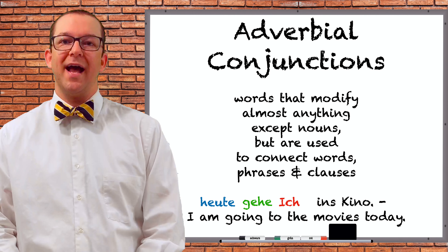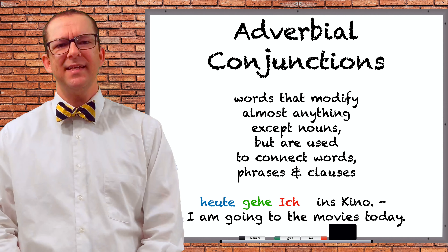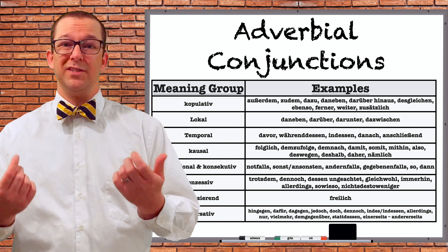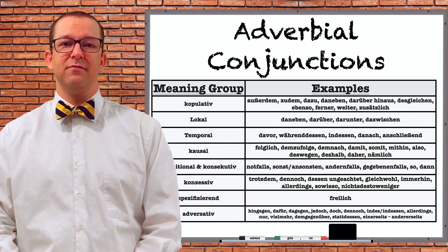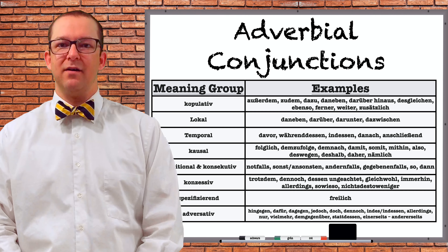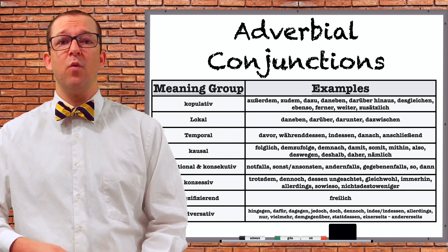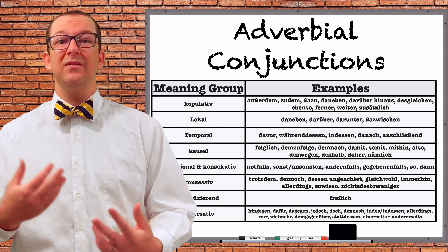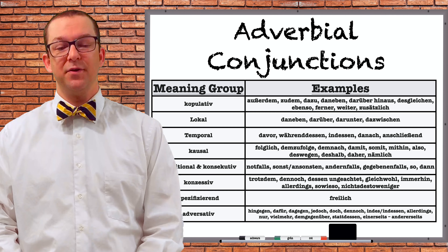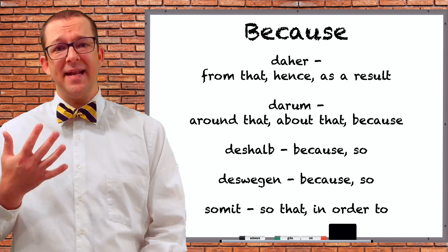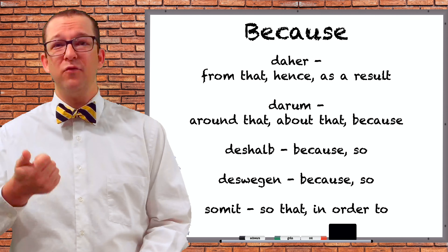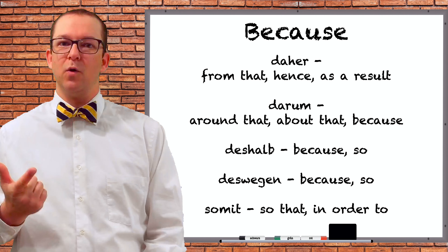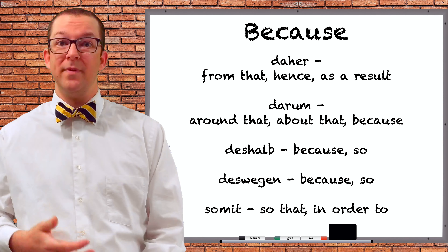Some of these adverbs can be used as conjunctions as they connect one clause to another — this is what we call adverbial conjunctions. There are a ton of adverbs that can be used to connect clauses, but only a handful are actually used in everyday conversations. I'm going to focus on those, then show a big list of others at the end. There are five main adverbs that basically mean therefore, that's why, or hence: daher, darum, deshalb, deswegen, and somit.